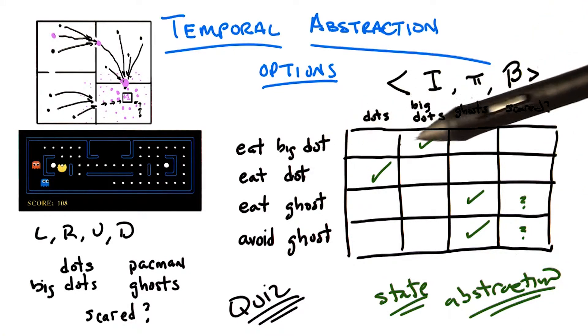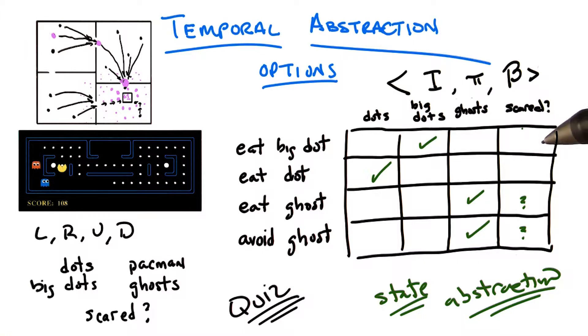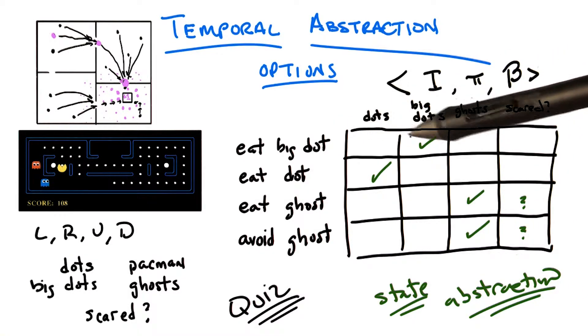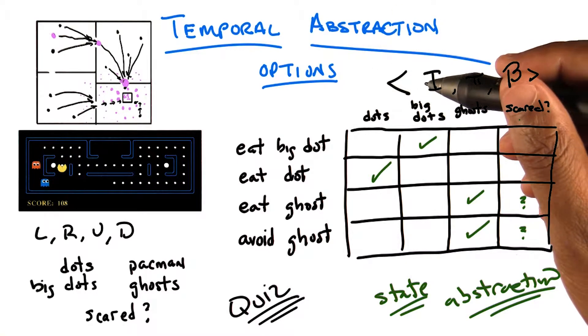Well, if you look at the eat big dot case, if I don't have to worry about where the dots are, never mind where the ghosts and whether they're scared or not, that means that if I needed to learn this policy, if I needed to figure out how to most optimally solve the problem of eating dots, I can actually ignore large parts of the state space. What happens if I can ignore large parts of the state space, Michael?